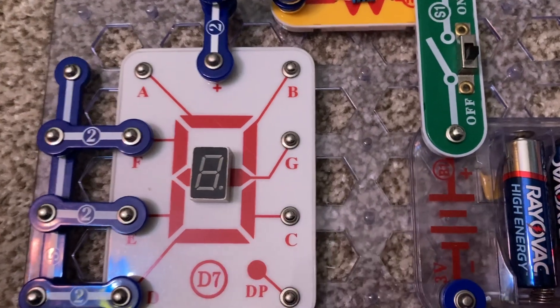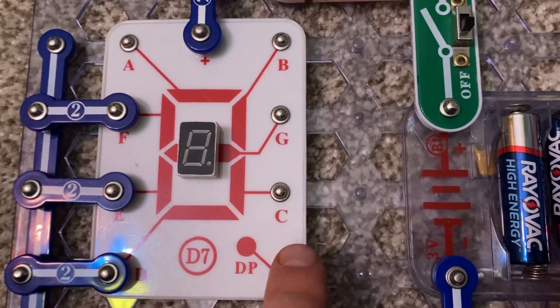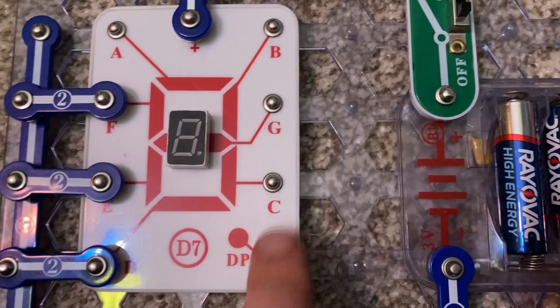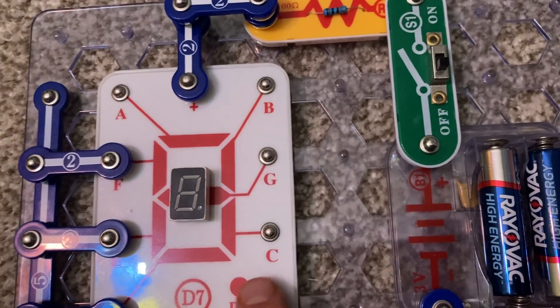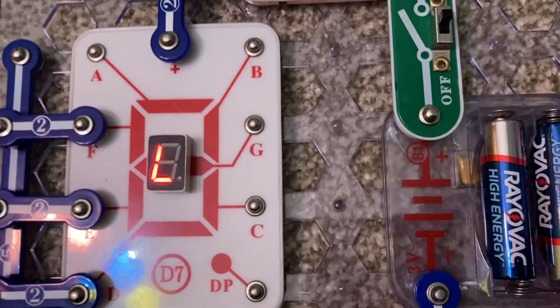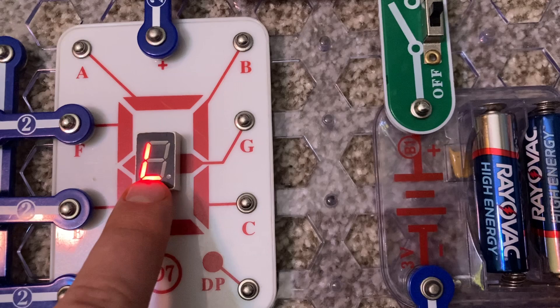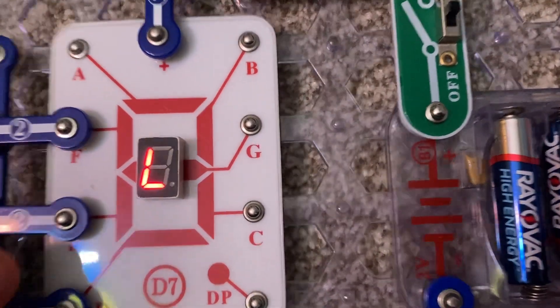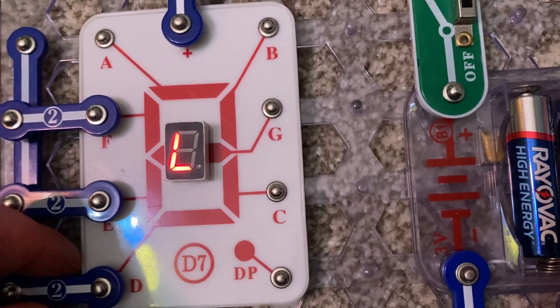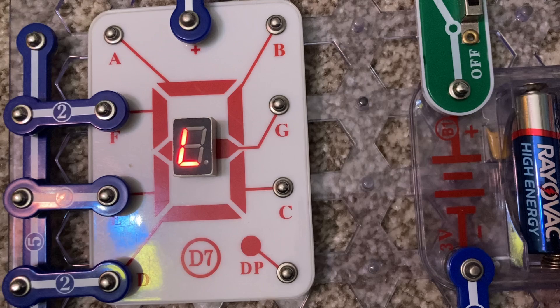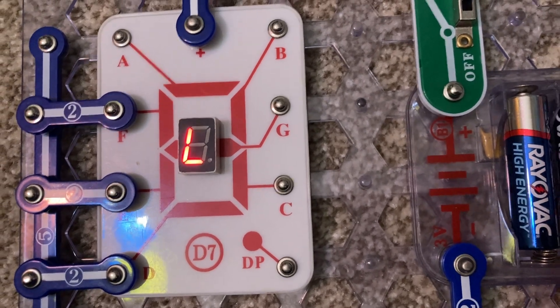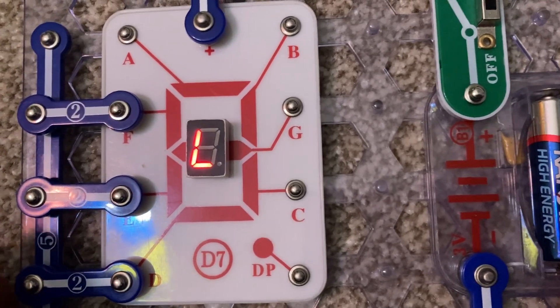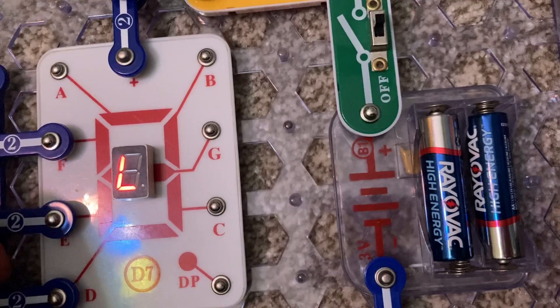You can apply power to the different LEDs by connecting two snap wires to any of these points. Right now, the two left LEDs in the bottom one are connected so that when you apply power, the capital letter L appears.